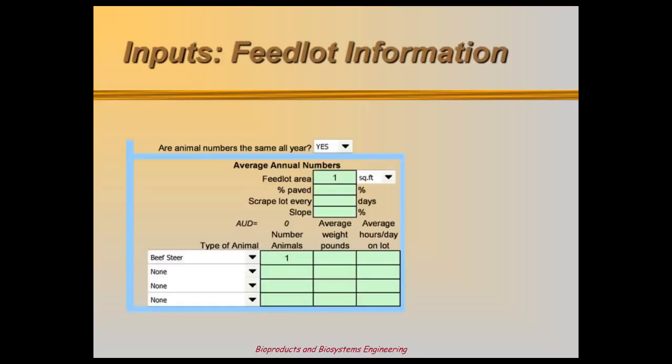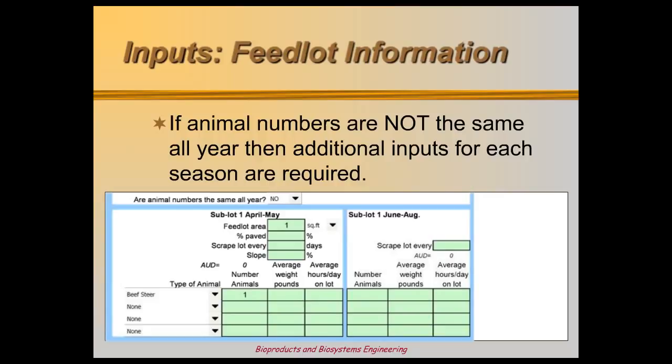For each lot, MinFarm first asks if the animal population changes throughout the year. A yes answer is for lots used year-round that always house similar numbers and types of livestock. Any change in lot use throughout the year requires a no answer — an example includes cow-calf operations where animals are turned out to pasture during the growing season. Answering no opens more cells for specific lot use by season.